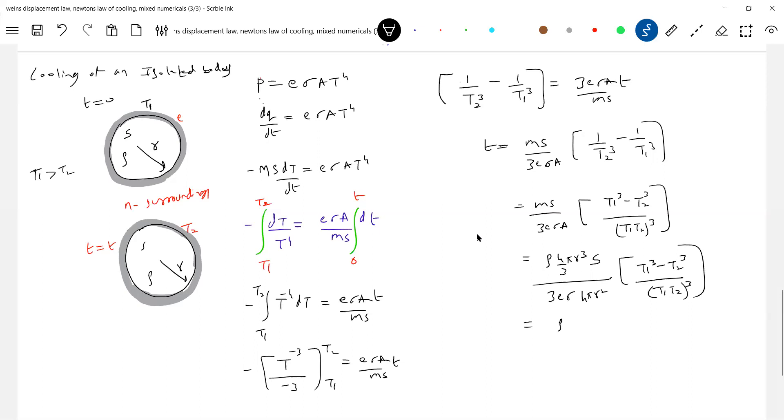Okay, now 4 pi r square I'll eliminate, so therefore what do I land up? 2 pi r square, density, r by 9 e sigma.